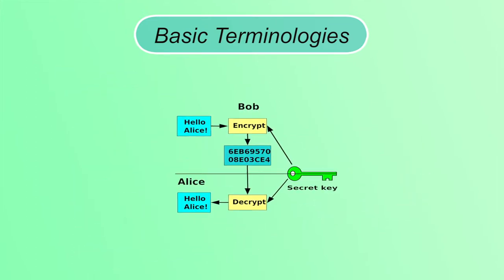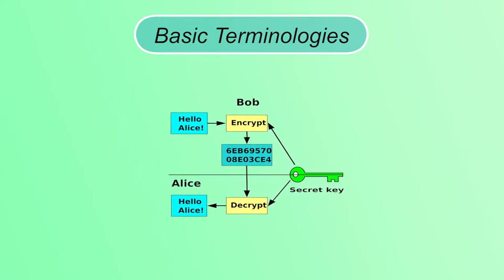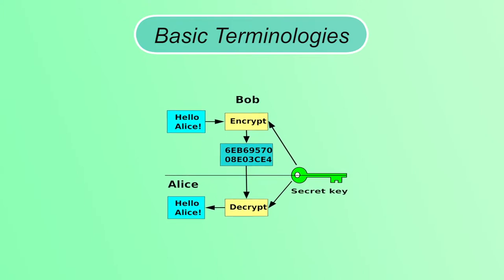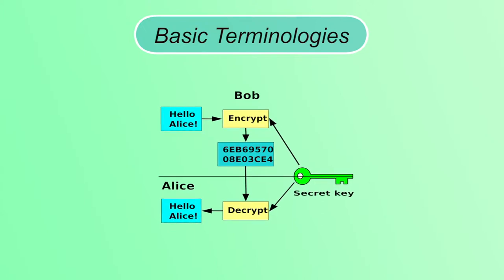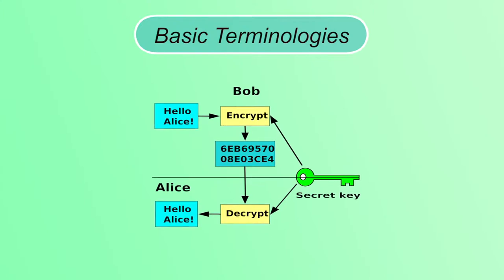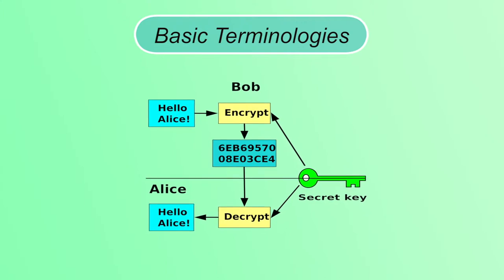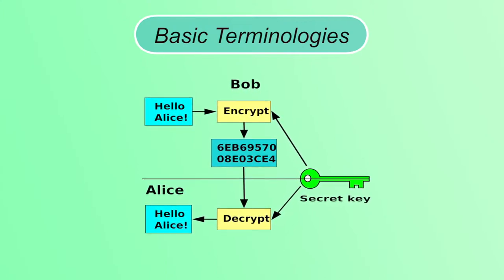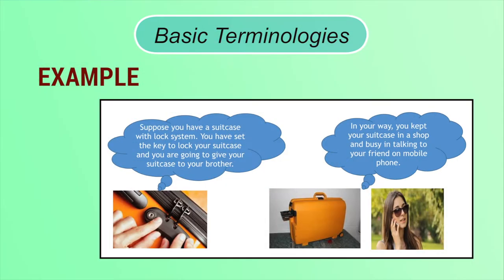In this image, sender is Bob and receiver is Alice. Bob wants to send the message 'Hello Alice.' Here, 'Hello Alice' is plaintext. Encryption will be done to convert the plaintext to ciphertext with the help of a key known only to sender and receiver. At the receiver side, after getting the ciphertext, decryption will be done using the secret key. You can also understand cryptography with a suitcase analogy.